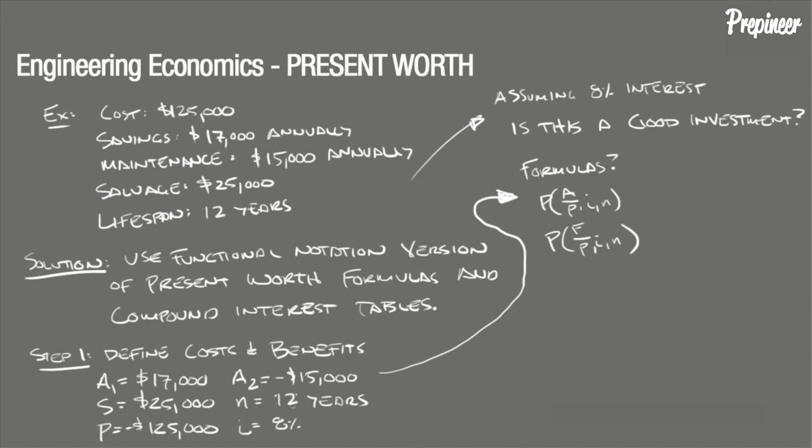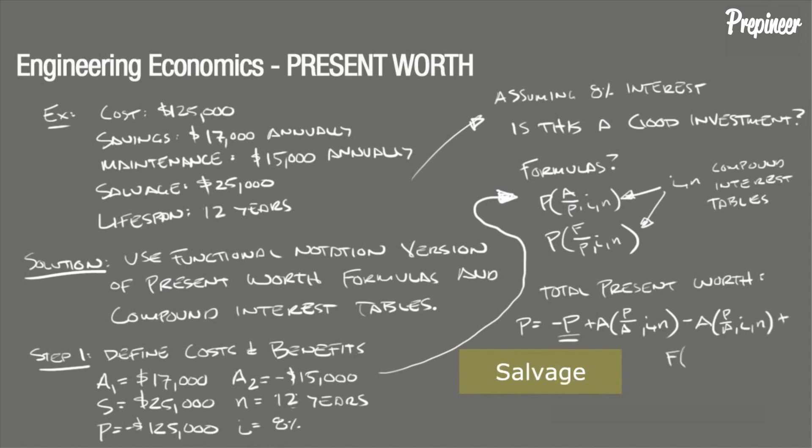The term P over A IN and P over F IN can be defined using the given values for the interest and period and the compound interest table starting on page 116 of the Supplied Reference Handbook. So the total present worth of all the future money receipts and disbursements of this particular investment will be P, our present worth is equal to negative P, which is our initial cost, plus A times P over A IN minus A P over A IN plus F times P over F IN.